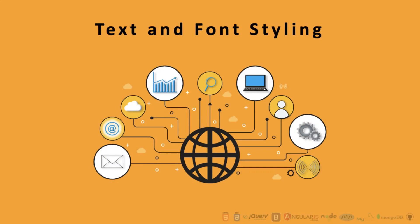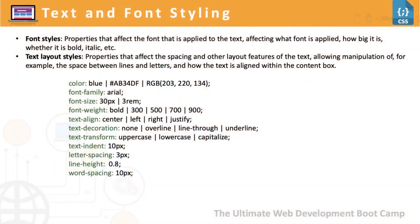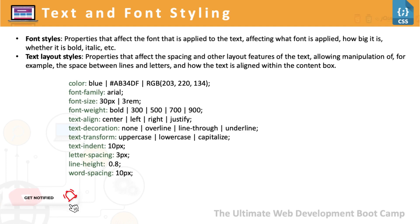In this video we're going to look into text and font styling. Though we have used a few of these properties already while working on practical examples, let's look into these in a bit more detail. There are multiple properties available. When it comes to text, you can use multiple font styles and text layout styles. Some of the properties let you control color, font family, font size, font weight, text alignment, decoration, and text transform — to uppercase, lowercase, or capitalize. You can also control indentation, letter spacing, line height, and word spacing. You can further reference these on MDN.